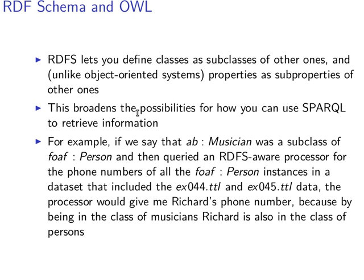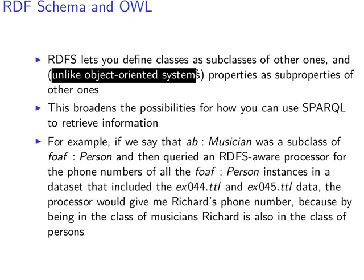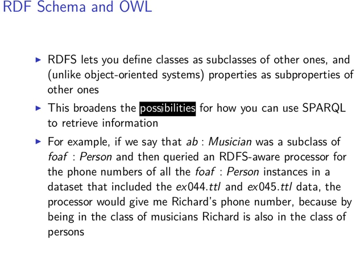RDFS lets us define classes as sub-classes of each other and properties as sub-properties of each other. This concept of properties being sub-properties of each other doesn't exist in an object-oriented system, which is slightly different but very advantageous — because we have more information, and the more information we have, the more possibilities we have and the more we can do with our data. This actually broadens, for example, the possibilities for how we can use SPARQL to retrieve information, since we have properties as sub-properties of one another, unlike in object-oriented systems.